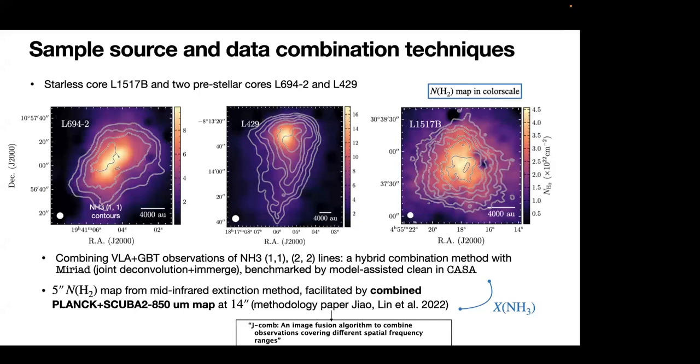For the ammonia data cubes, we use this joint deconvolution plus a merge in the final step to conserve, to make the flux level conservative. This method is actually benchmarked by a model-assisted clean in CASA. So we are testing these two different approaches of combining the two data sites in order to have a combined ammonia data cube of highest fidelity achievable. In order to have a high angular resolution abundance map, we need to have a molecular hydrogen map of matchable angular resolution. So for this, we have to use the mid-infrared extinction method.